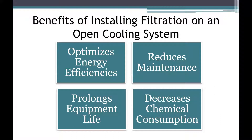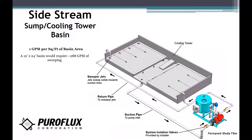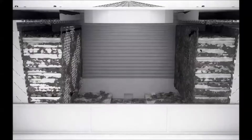So let's put a filter system on your tower. The first way we can do it is your typical side stream. Here we have a filter system with sweeper nozzles in the cooling tower basin. The rule of thumb for sizing for sweepers is 1 gpm per square foot of basin area. Using this as a guide, if we have a 12 by 24 basin, we're going to require around 288 gallons a minute of sweeping. Dirty water is brought to the filter, and filtered clean water is sent back to the basin via the nozzles.